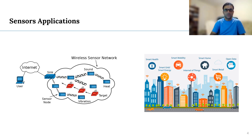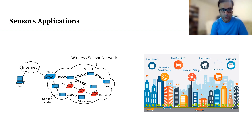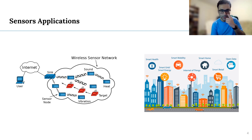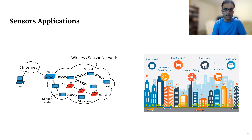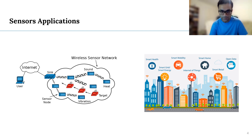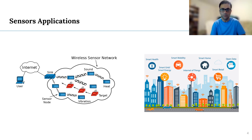Talking about some of the sensor applications, we can see a lot of examples in real life. But in this figure, there is an example of a wireless sensor network which is composed of different sensors, including sound sensor, heat sensor, vibration sensors, and those sensors may be connected with the sink through some multi-hop networks. The sink is actually connected to a user or server through the internet. The objective here is to collect the environmental conditions or sense the environment around a target node, which in this case is represented by some red colored boxes.